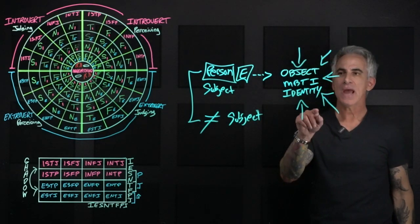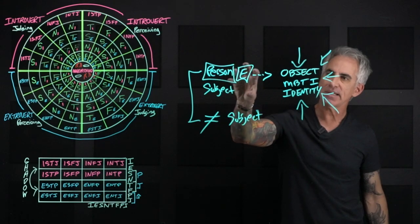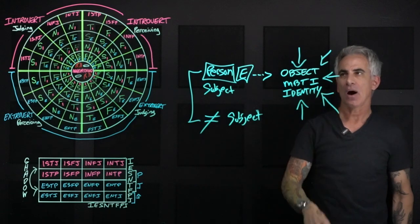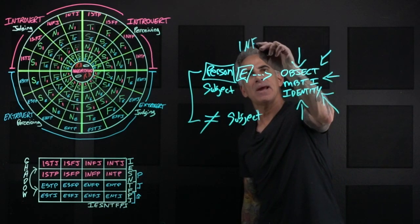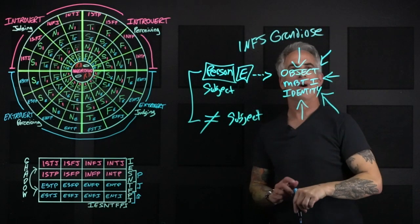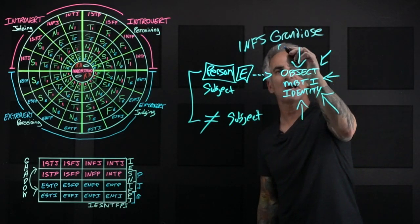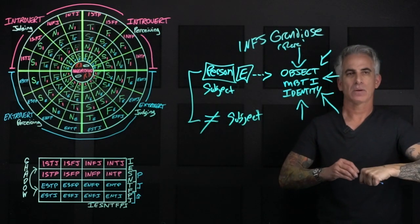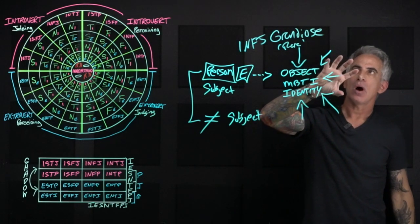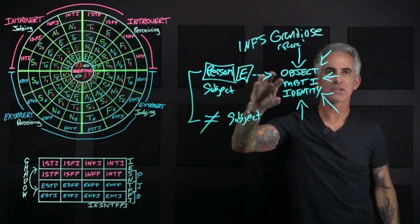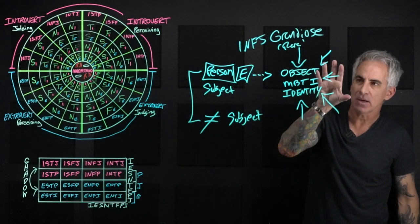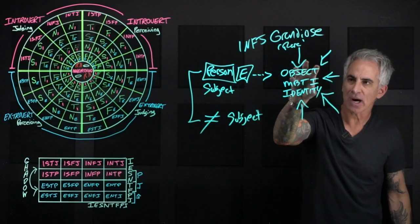And as long as this subject is looking at object, which is MBTI identity of the INFJ grandiose or better said rare with friends and everything that is surrounding this person's life on its cell phone, confirming and verifying this shiny object.